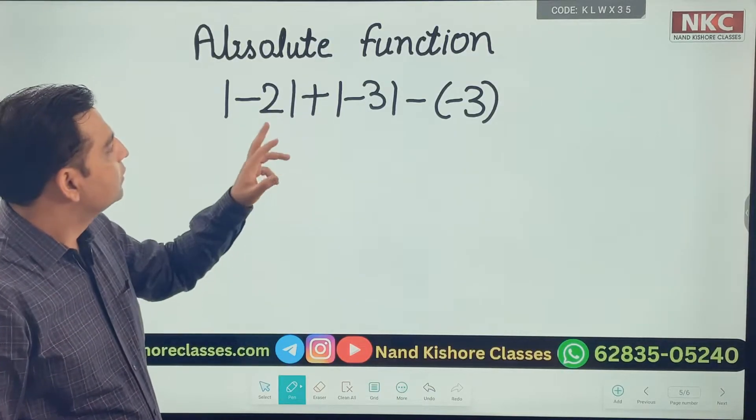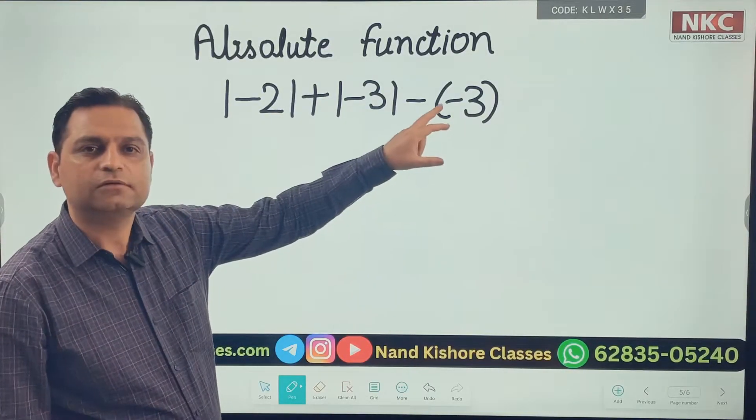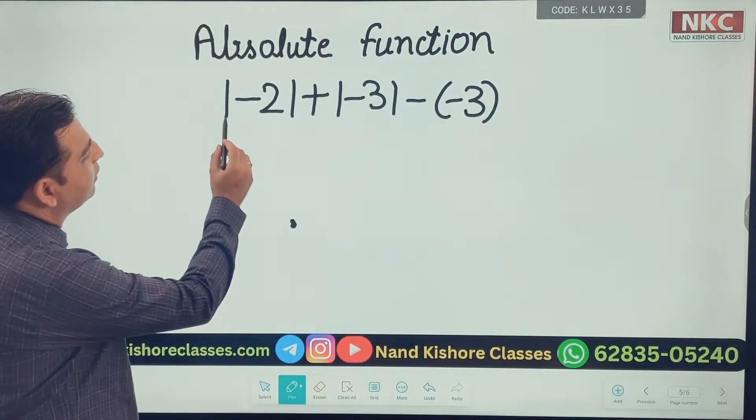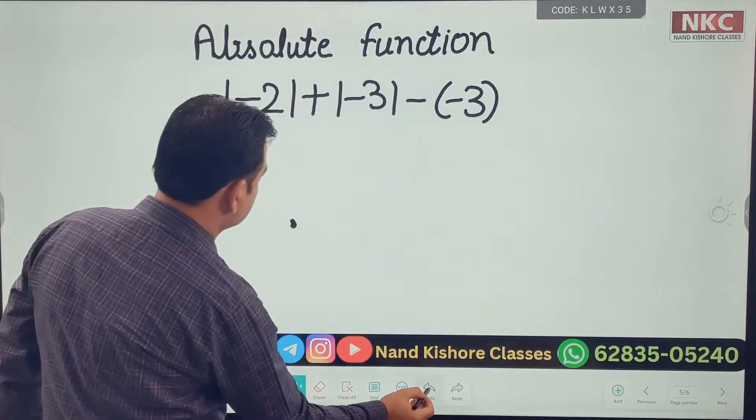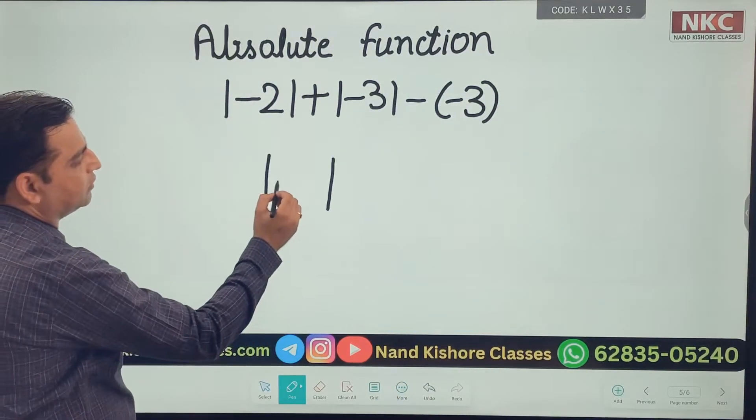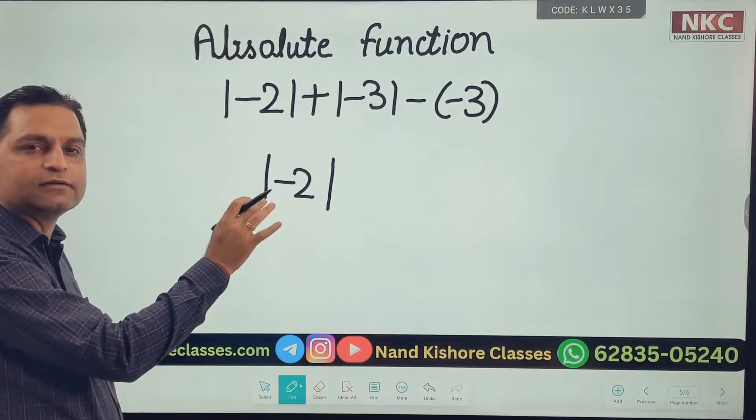Now this is a normal bracket, round bracket, open bracket, but this is what we have: absolute function. Now how does absolute function look like? It's like two straight lines like this with any number written inside. Now what does that mean?